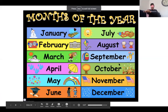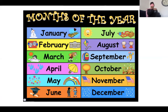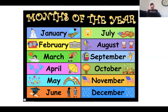January, February, March, and April, May, June, July, and August, September, October, November, December. These are the months of the year.